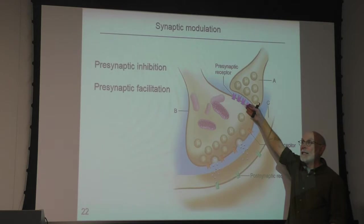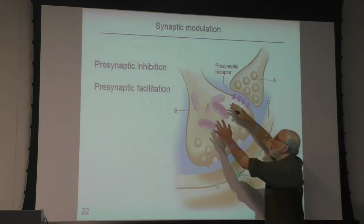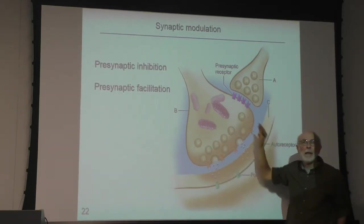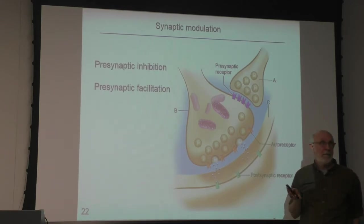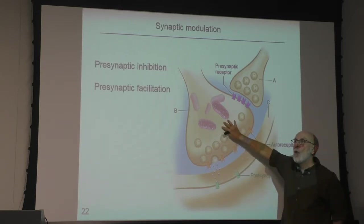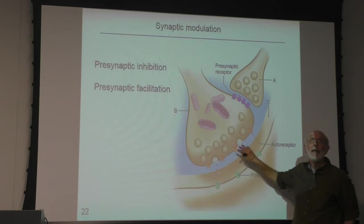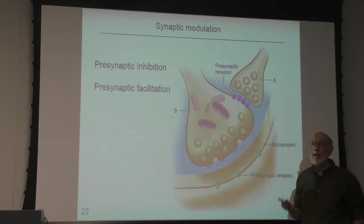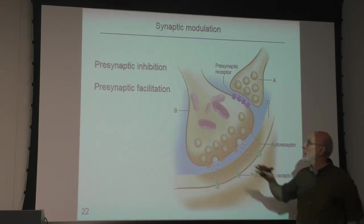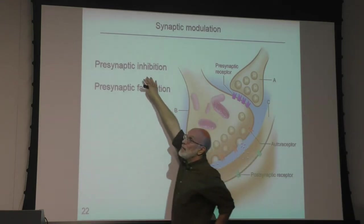If this receptor activates GIRK channels, what's going to happen to the voltage of this part of the cell? Hyperpolarize — more open potassium channels make this part of the cell more negative. Is that going to facilitate or inhibit neurotransmitter release? It'll inhibit it, because the more negative membrane potential makes it harder for voltage-gated calcium channels to open — shorter duration, less calcium influx, less neurotransmitter release. So this synapse is performing presynaptic inhibition.